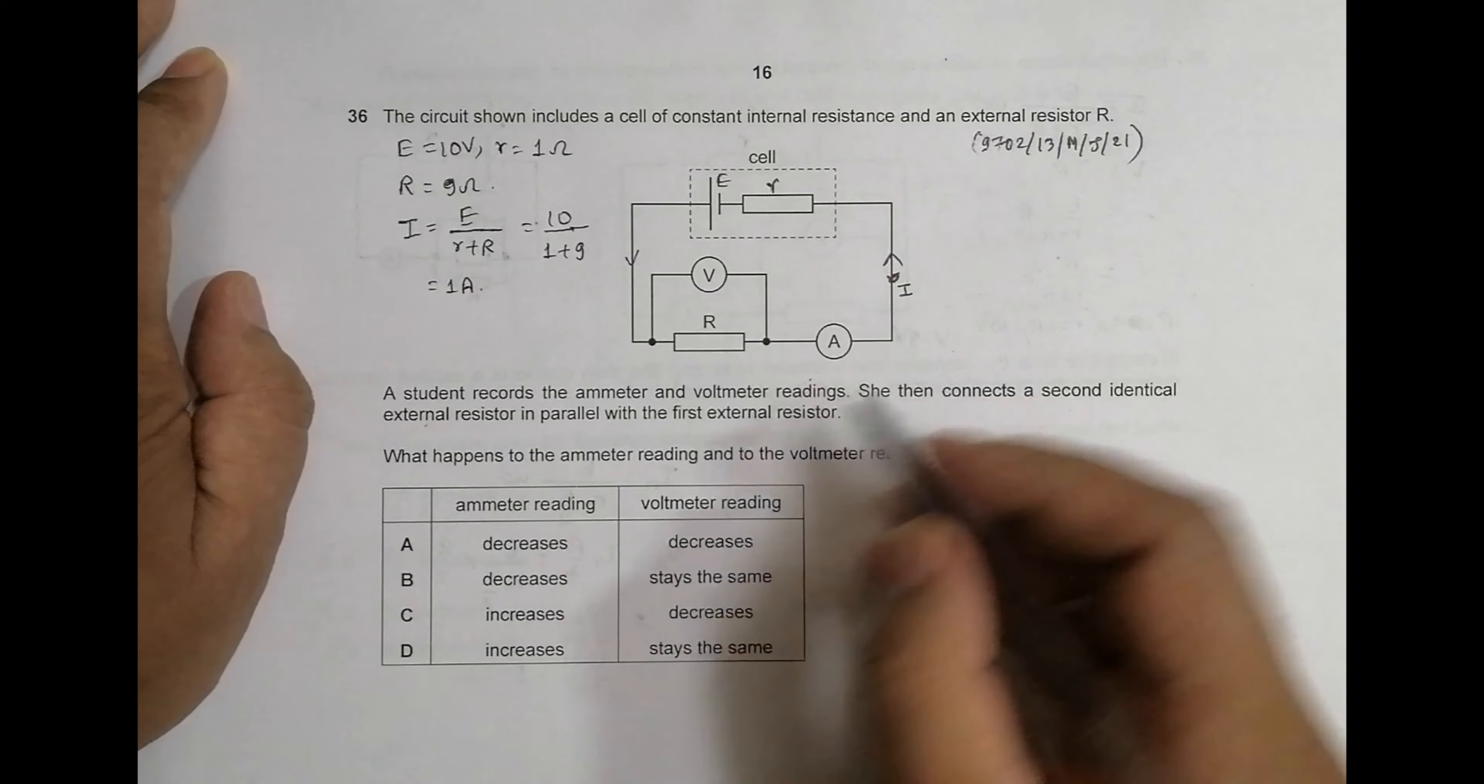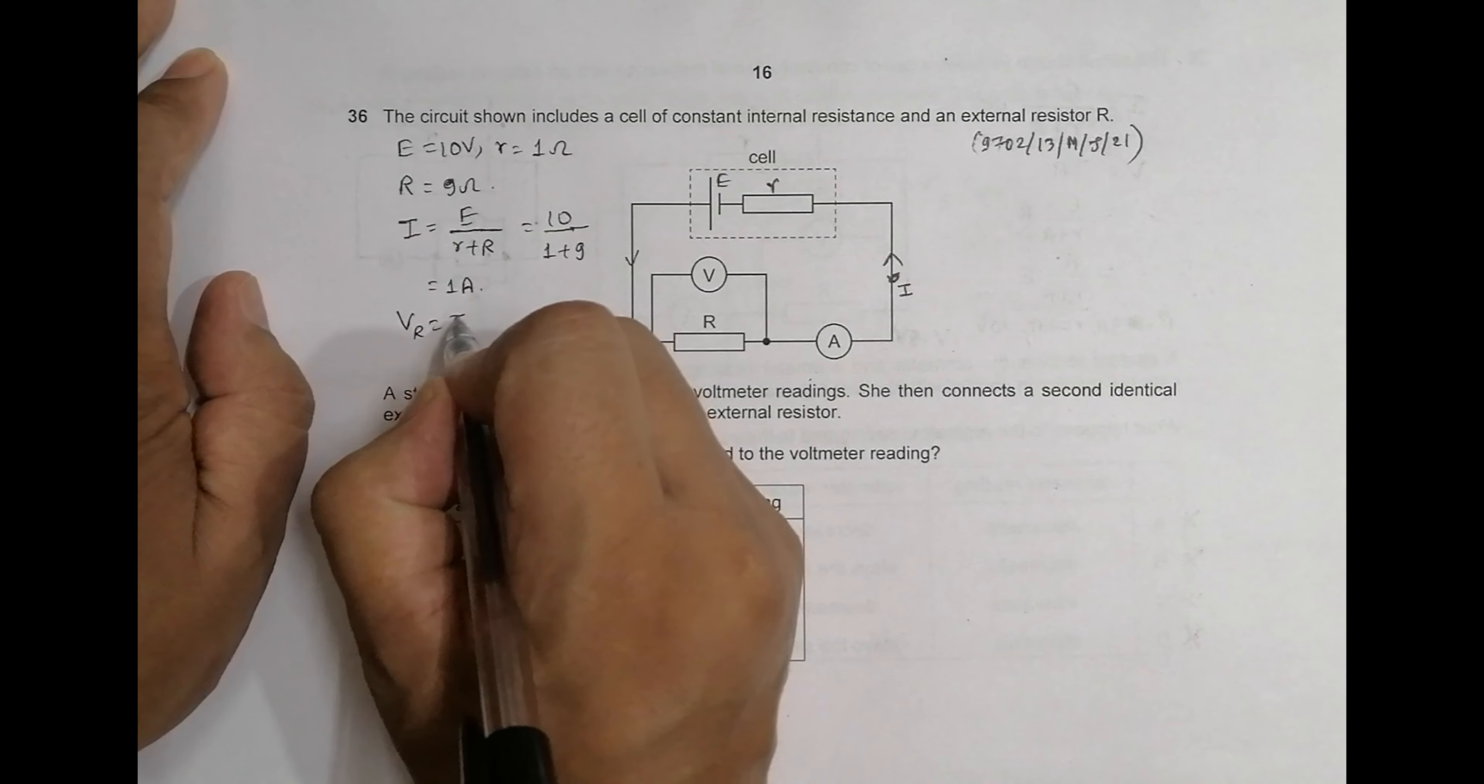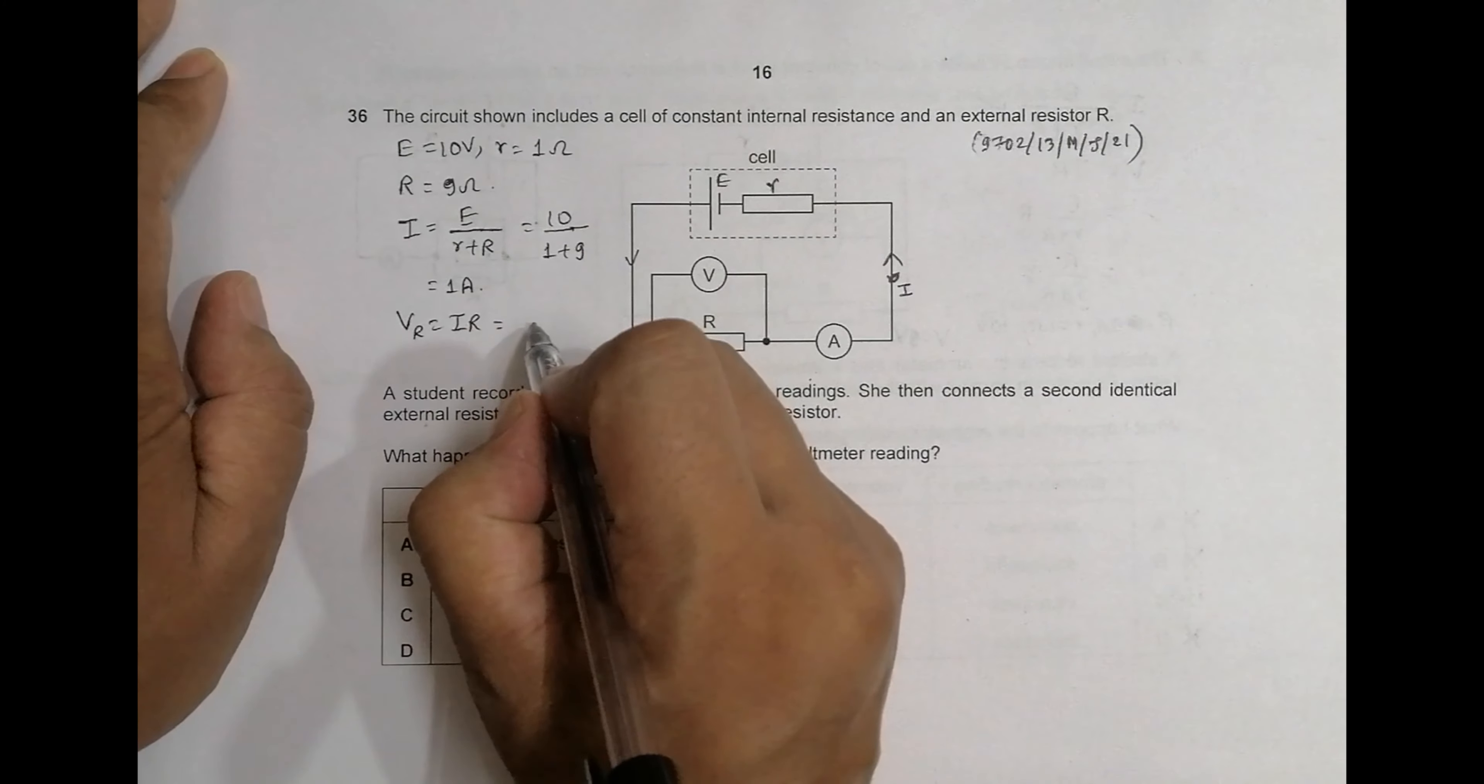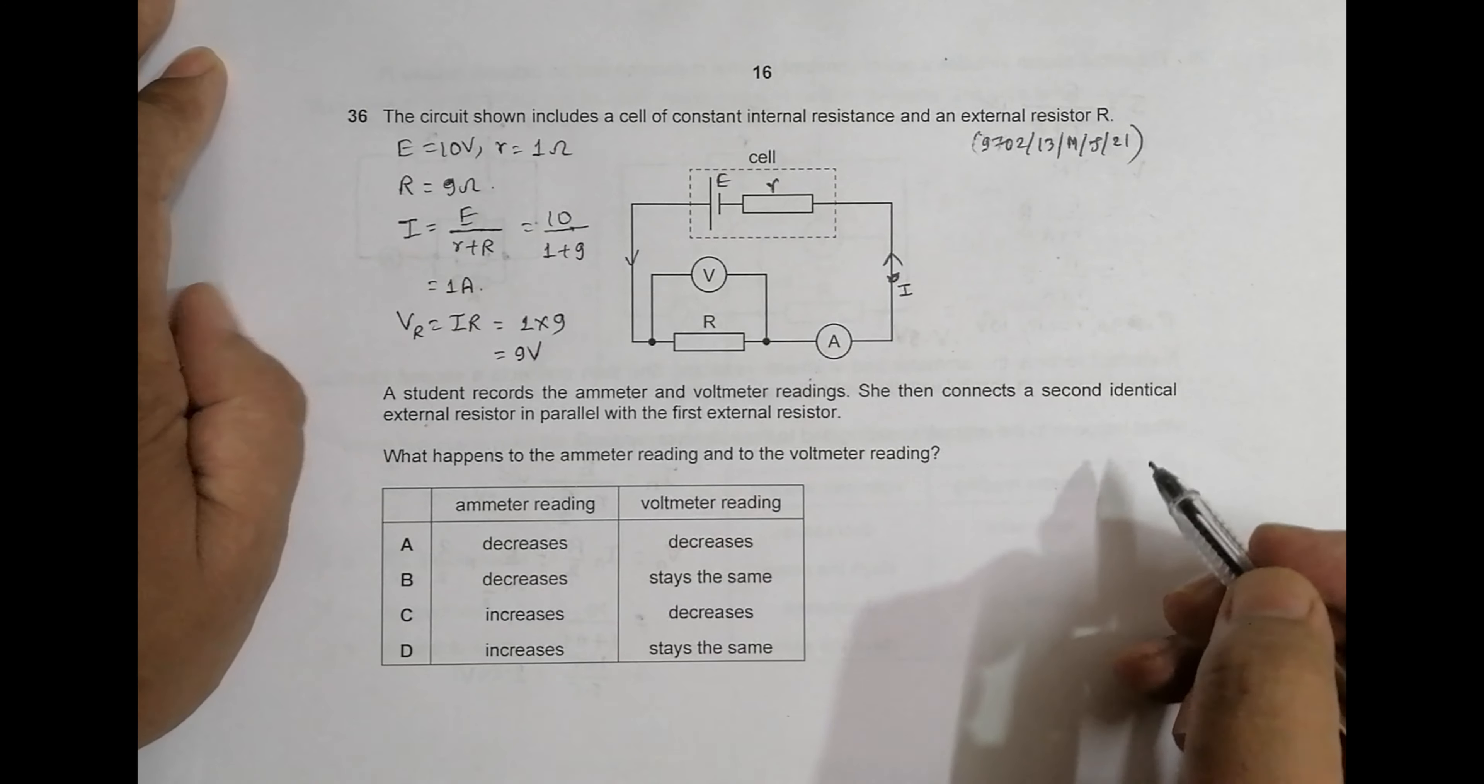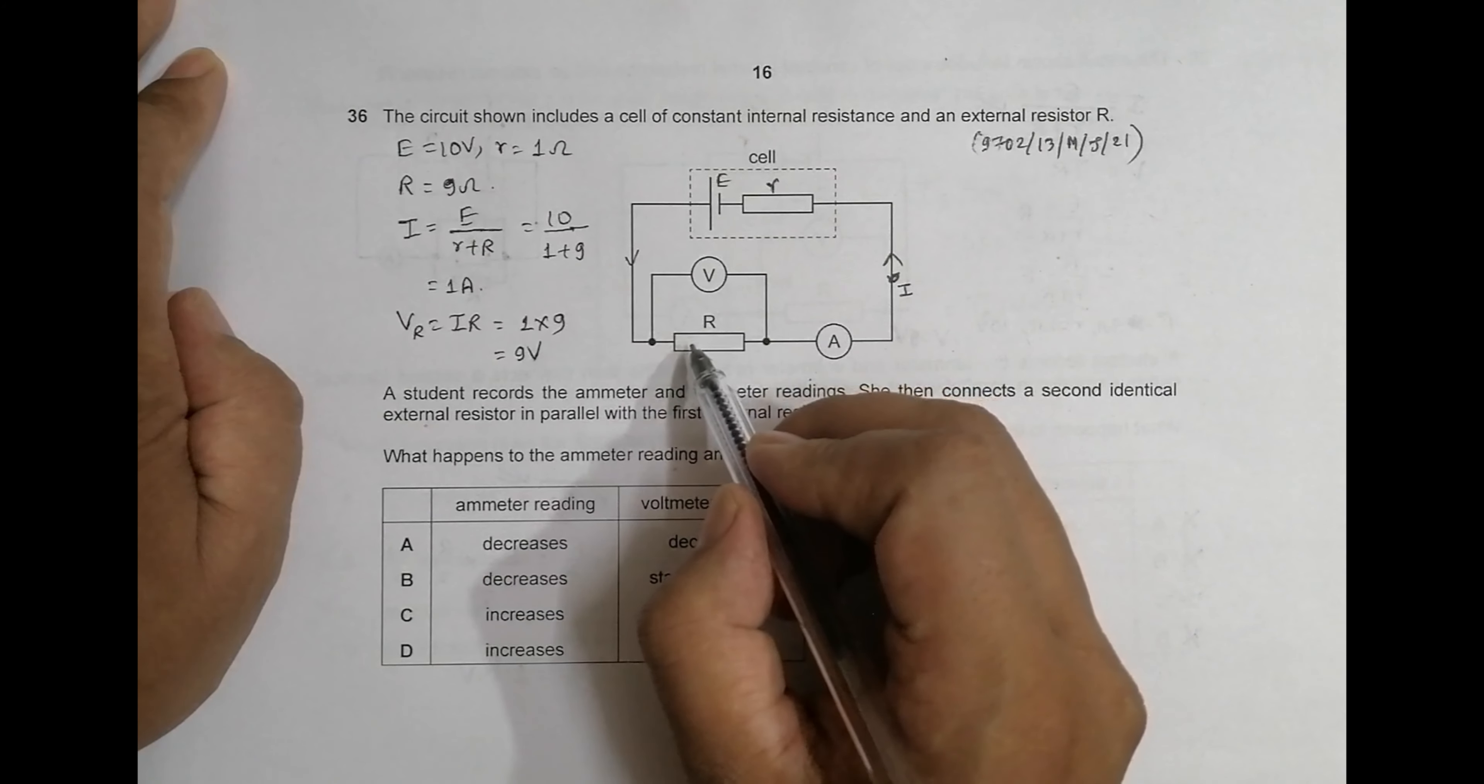So the current is equal to 1 ampere, and the V across this R should be equal to I times R. That's equal to 1 times 9, so it's equal to 9 volts. So it's 9 volts here and 1 ampere here.